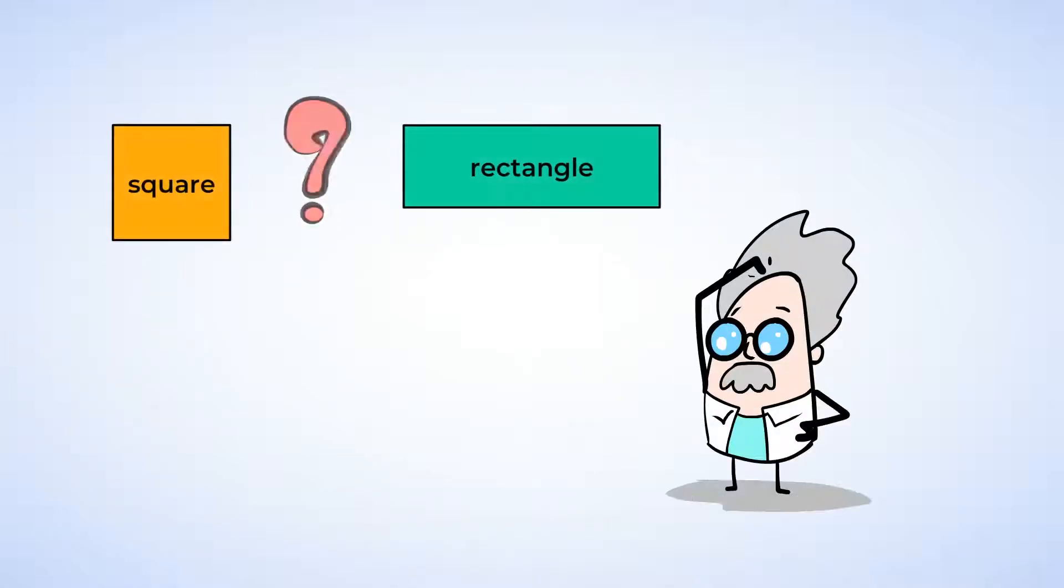Do you know what makes a square different from a rectangle? A square is a special rectangle because all four sides are the same length, or congruent. This means that all squares are rectangles, but not all rectangles are squares.